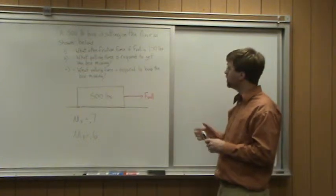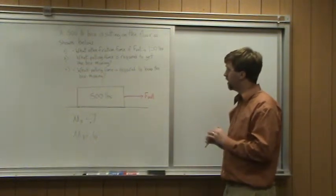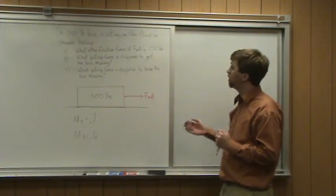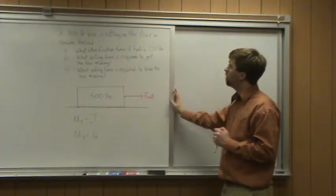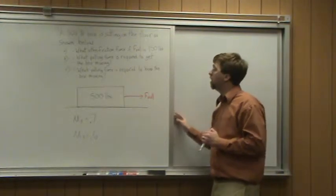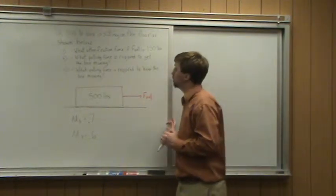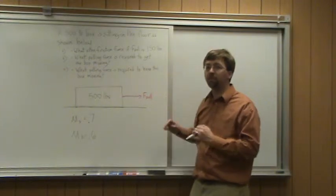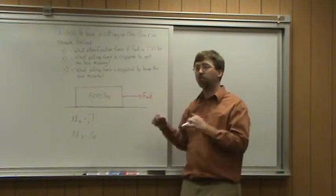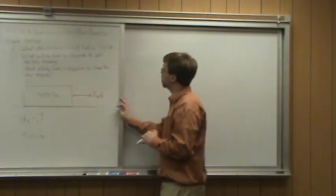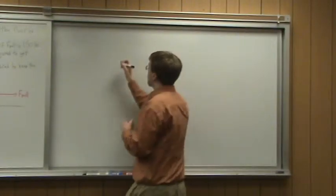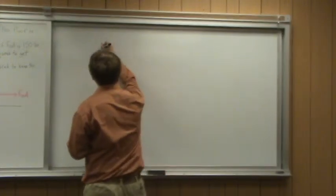With all of these, we're going to look at how we can solve for this. Starting with part A: what is the friction force if the pulling force is 150 pounds? To answer that, we need to look at what is the maximum friction force and whether this object is going to start moving already or is not moving yet. To figure that out, we want to draw a free body diagram of our box.